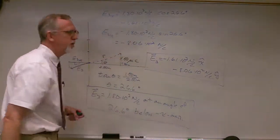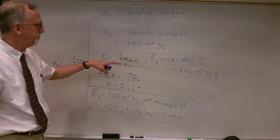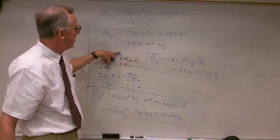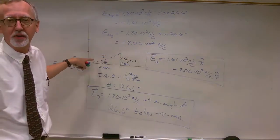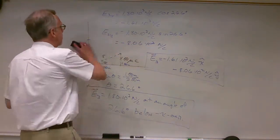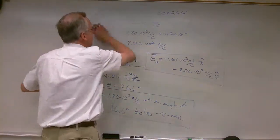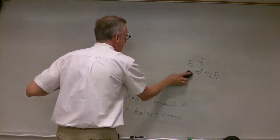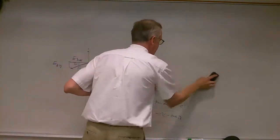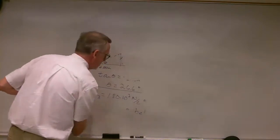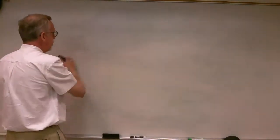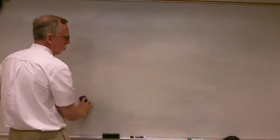What if we have more than one charge? In all of these examples we had one charge and we figured out the electric field at some different points — three different points. What if we have more than one charge? How do we figure out the electric field due to two or three or more charges?